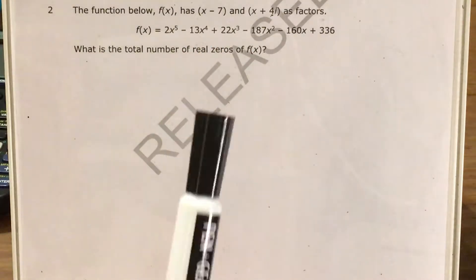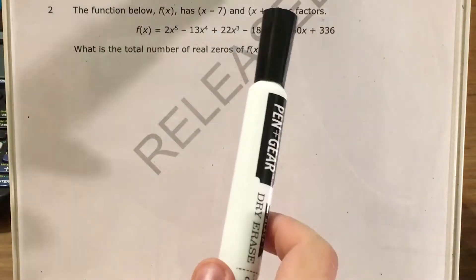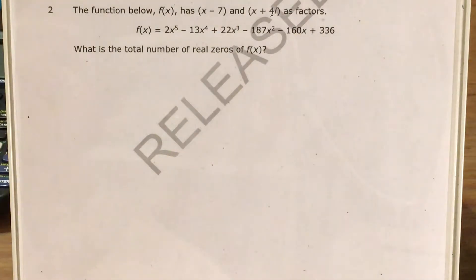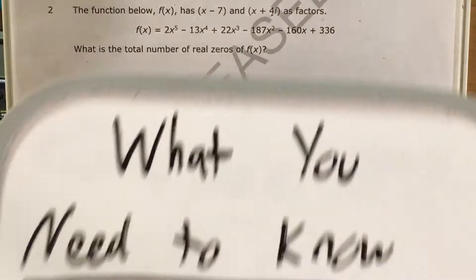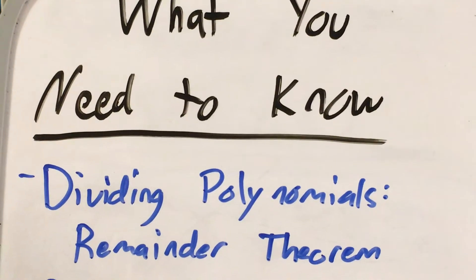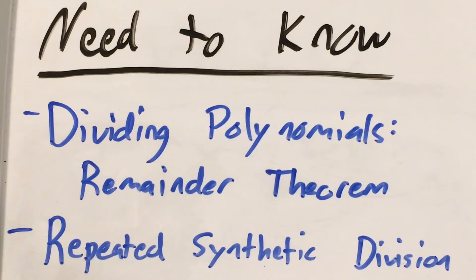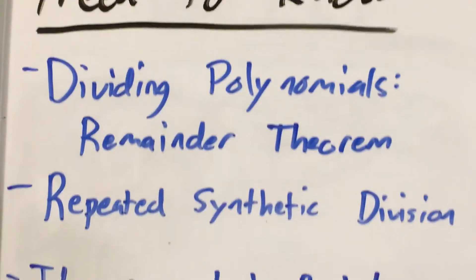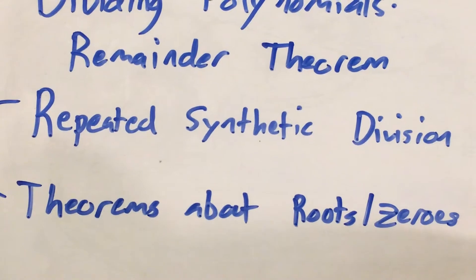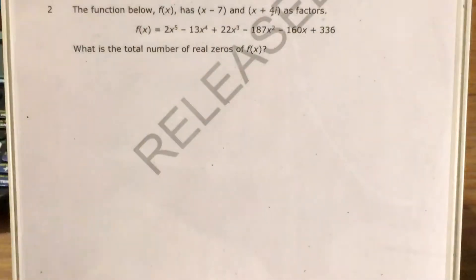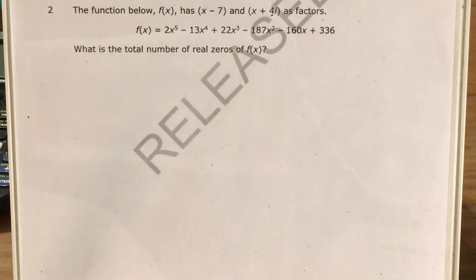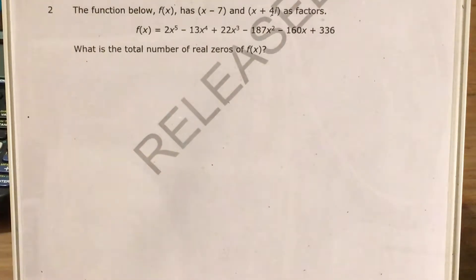The question gives us this function and tells us that x minus 7 and x plus 4i are factors, and we're supposed to find the total number of real zeros of f of x. This question covers a lot of ground. We'll need to know the remainder theorem, how to use synthetic division, and some of the theorems about roots and zeros to fill in the gaps.